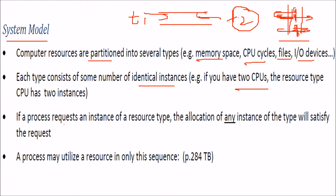If a process requests an instance of a resource type, the allocation of any instance of that type will satisfy the request. A process comes and asks for a resource. If the resource is available, it will be allocated, but there are certain cases where it may not be allocated.